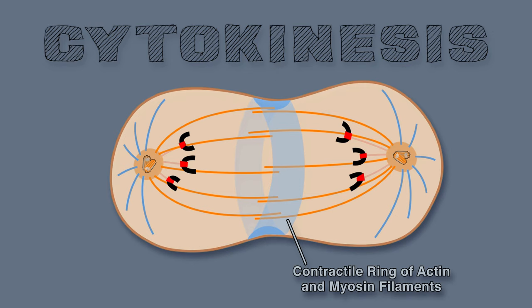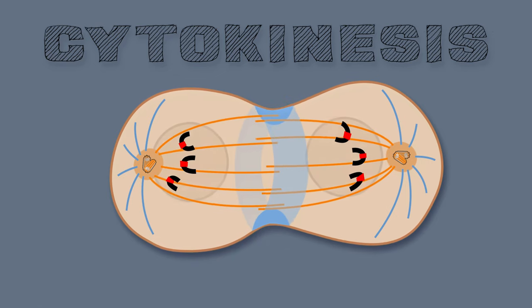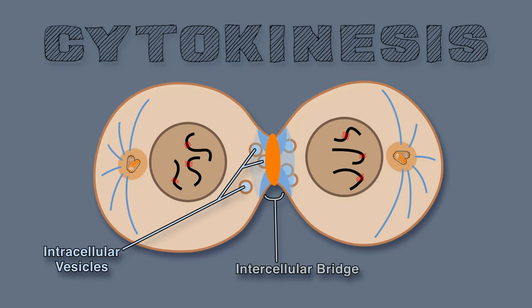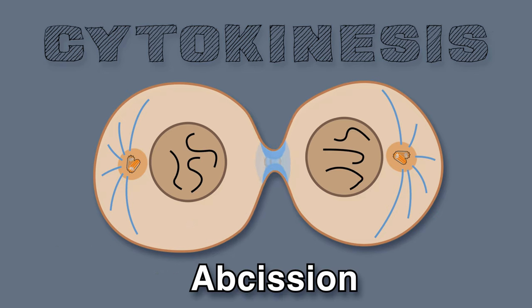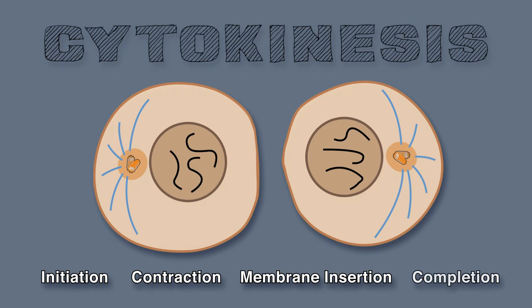The contractile ring begins to assemble during anaphase, just beneath the plasma membrane. As the ring contracts, there is formation of an intercellular bridge and fusion of intracellular vesicles, to add more plasma membrane to compensate for the extra surface area. At the center of the intercellular bridge there is what is called the midbody, which consists of the remains of the interdigitated interpolar microtubules at the spindle midzone, packed together within a dense matrix material. Abscission is the final cleaving of the two daughter cells, so cytokinesis has four steps: initiation, contraction, membrane insertion, and completion.